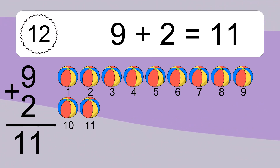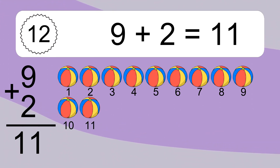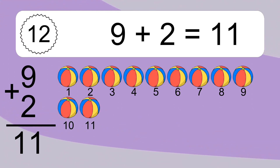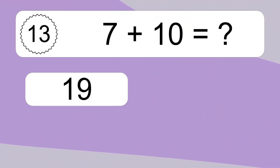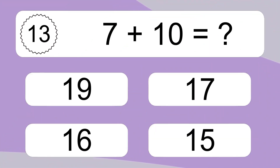Let's count it. 1, 2, 3, 4, 5, 6, 7, 8, 9, 10, 11. 7 plus 10 equals what?